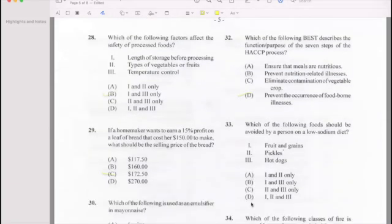Number 33: Which of the following food should be avoided for a person with low sodium diet? If your answer is C, then you're correct. Pickle and hot dog.